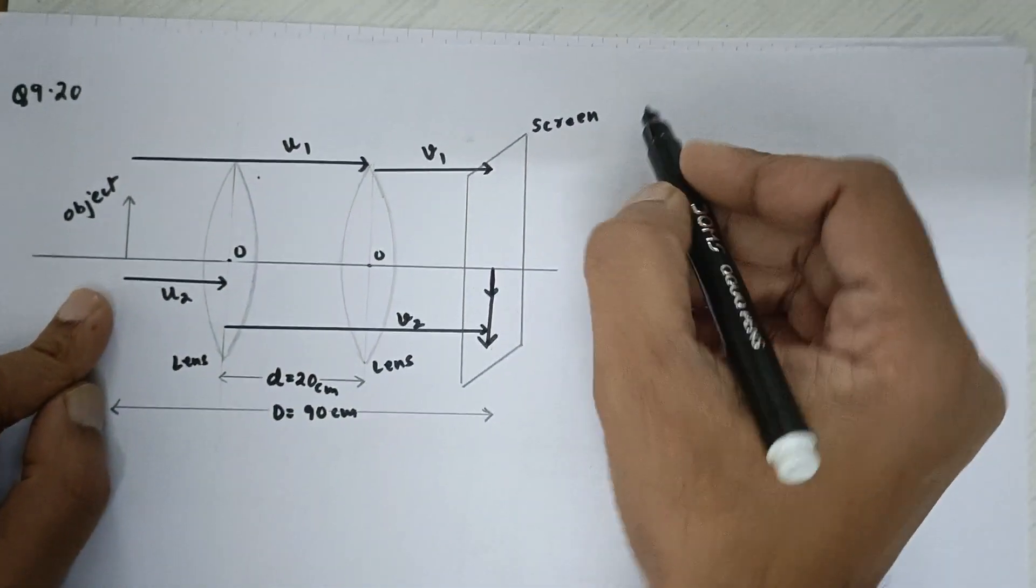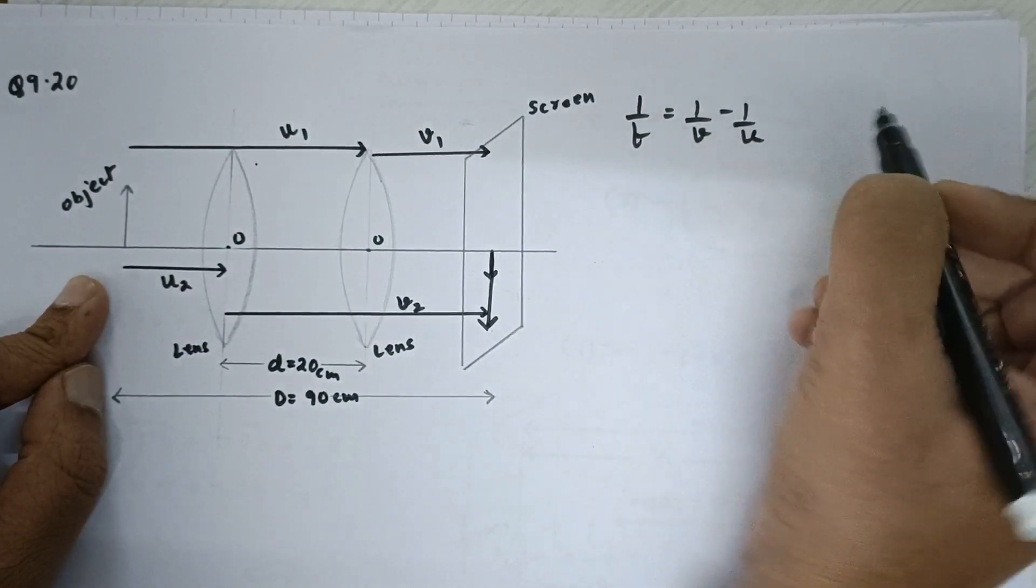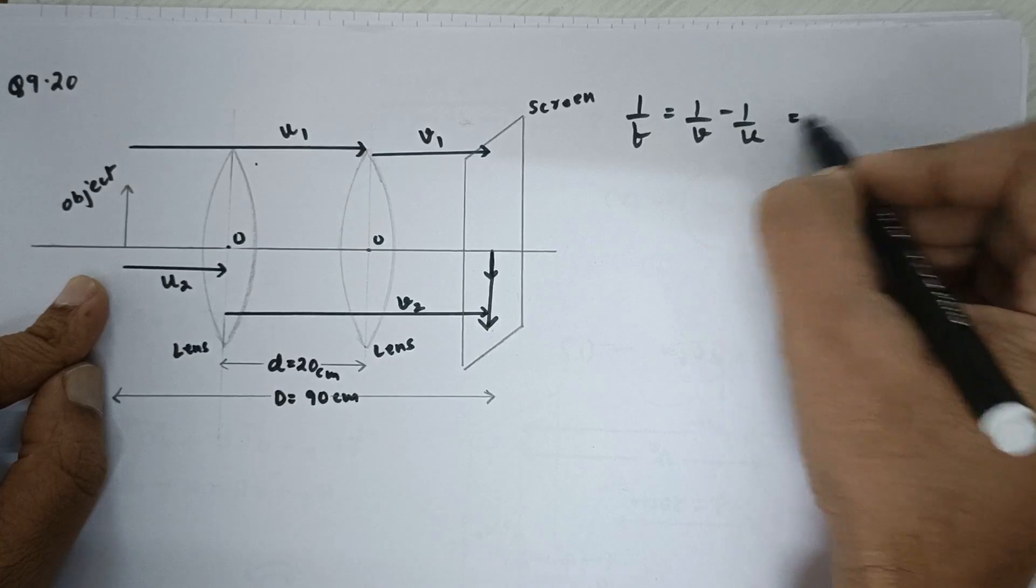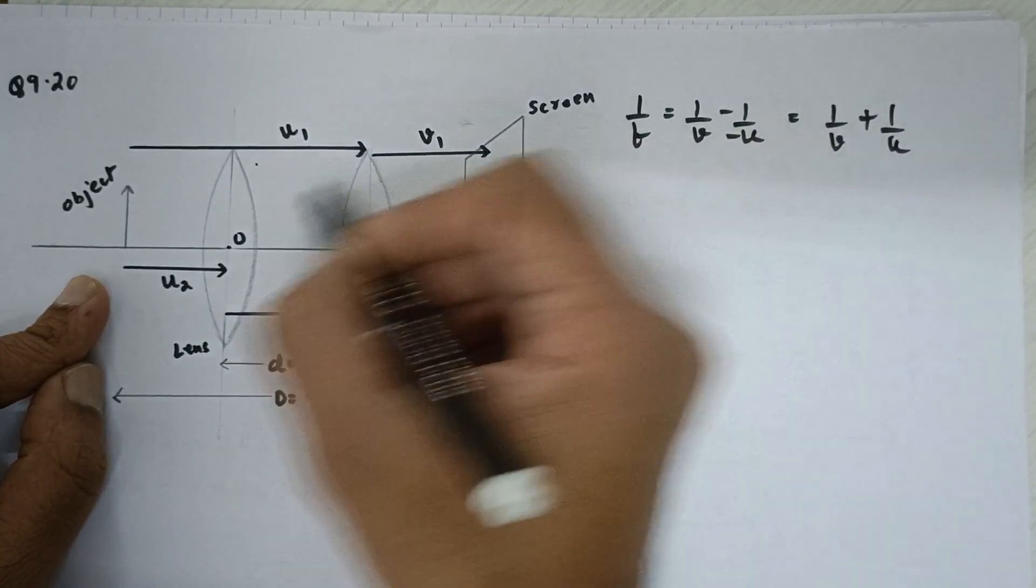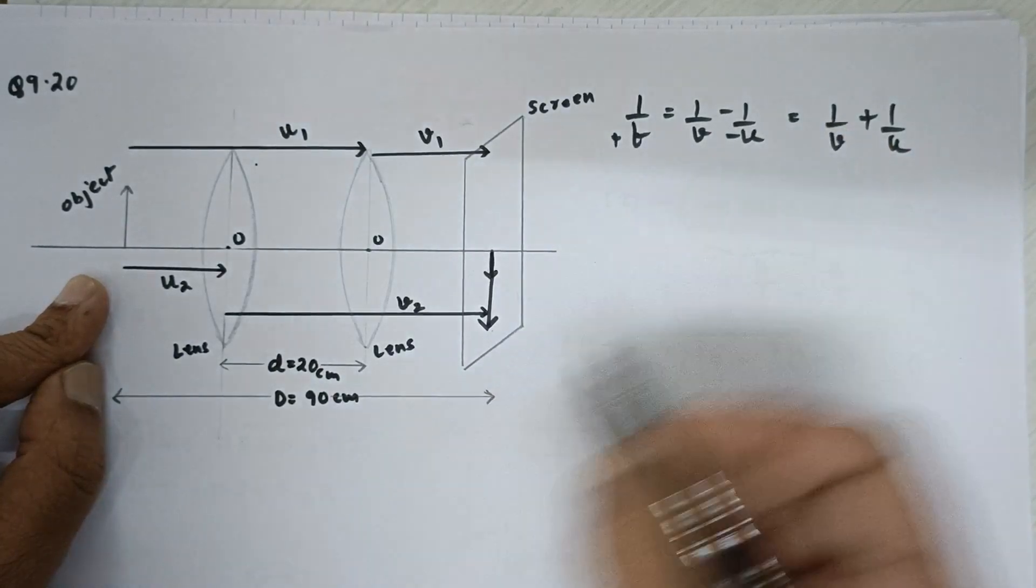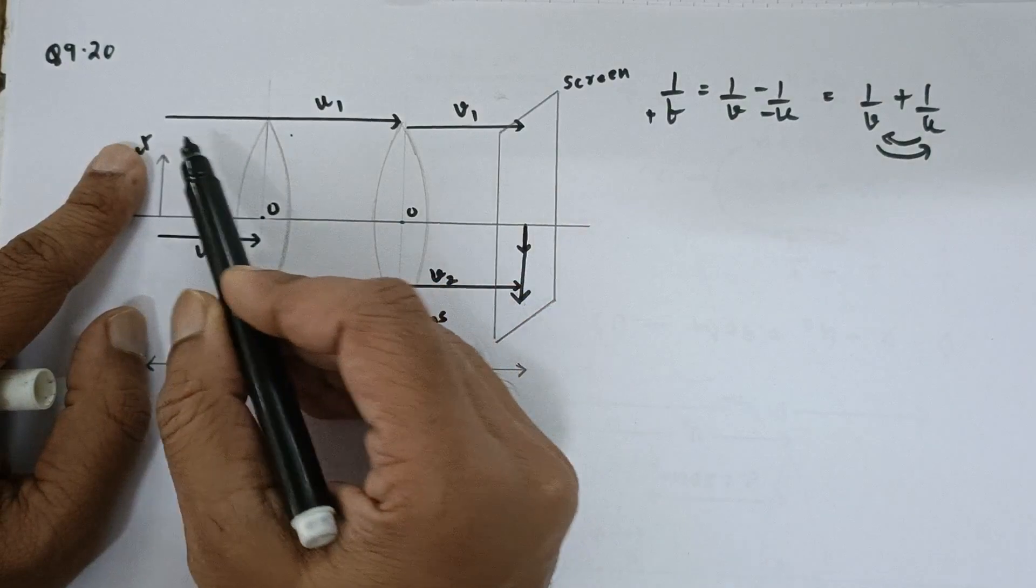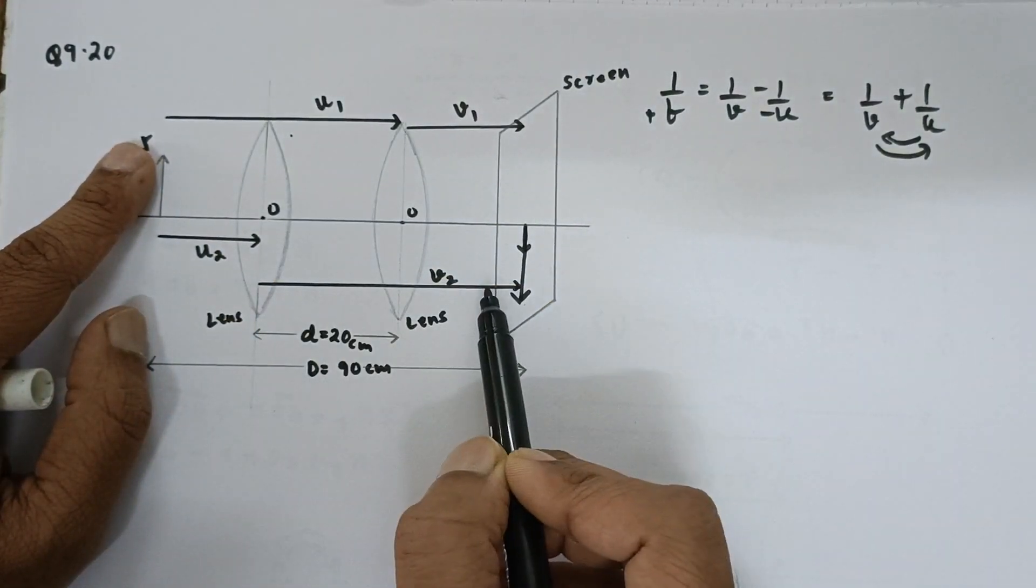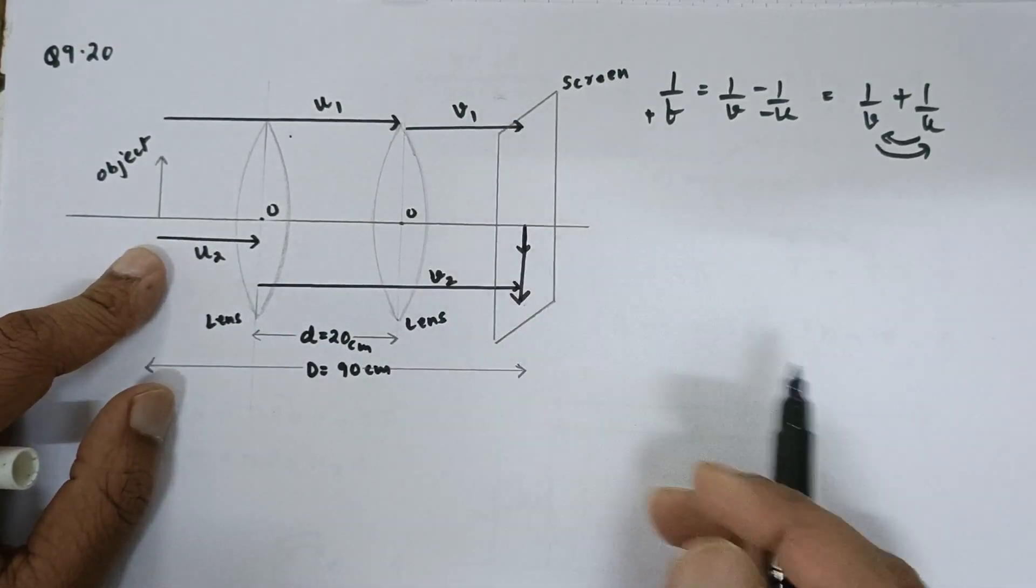It is because of the fact that we know 1 upon f is 1 upon v minus 1 upon u but since u is negative, this can be written as 1 upon v plus 1 upon u. Anyhow for convex lens, this is positive. So, this u and v are interchangeable values which means the u1 in the first case becomes v2 in the second case and the u2 in the second case becomes v1 in the first case.